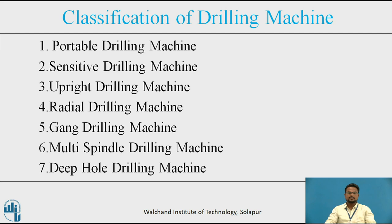Coming to the gang drilling machine. This machine consists of a number of drill heads placed side by side in line, so that more than one hole or different holes can be drilled on the same job. The advantage of these machines is that a series of operations can be done with different spindles mounted with different tools on the same job, simply by moving the workpiece from one position to another.